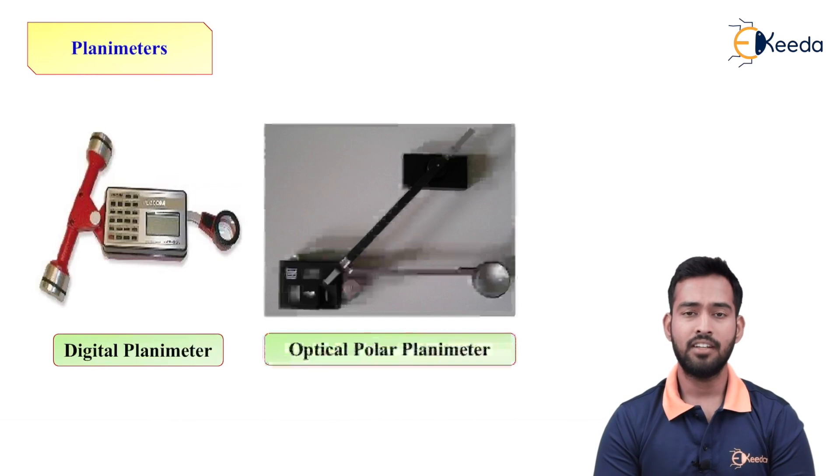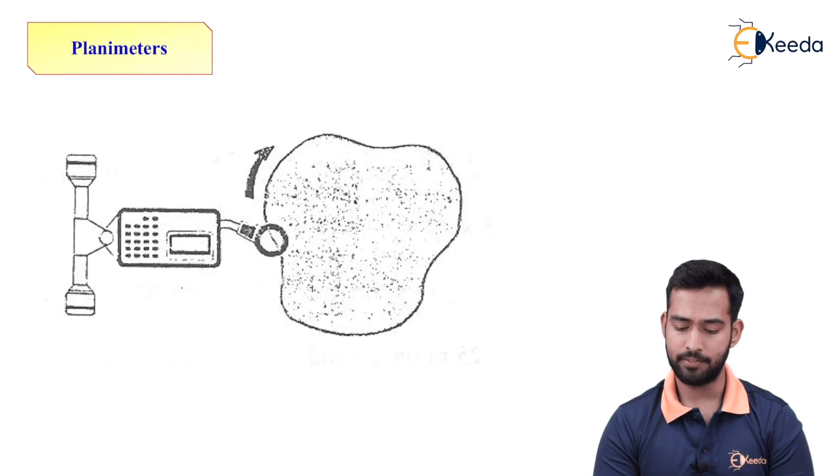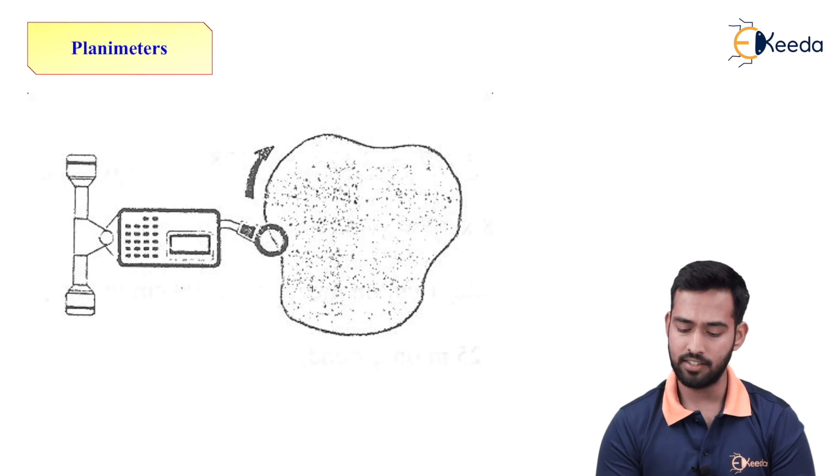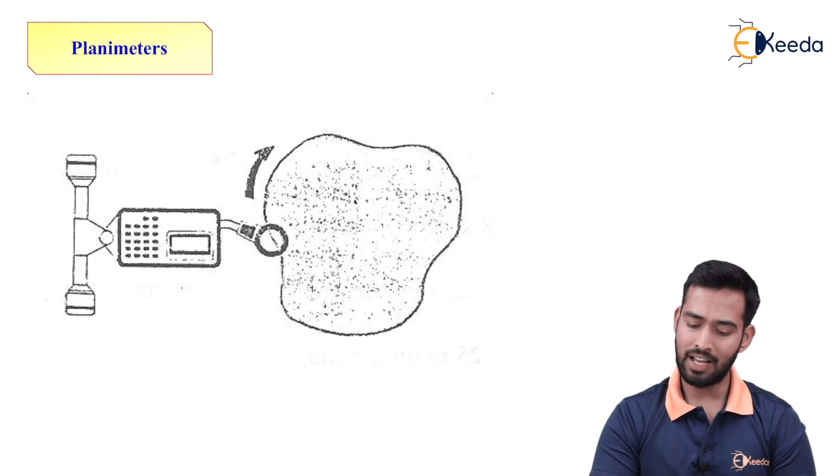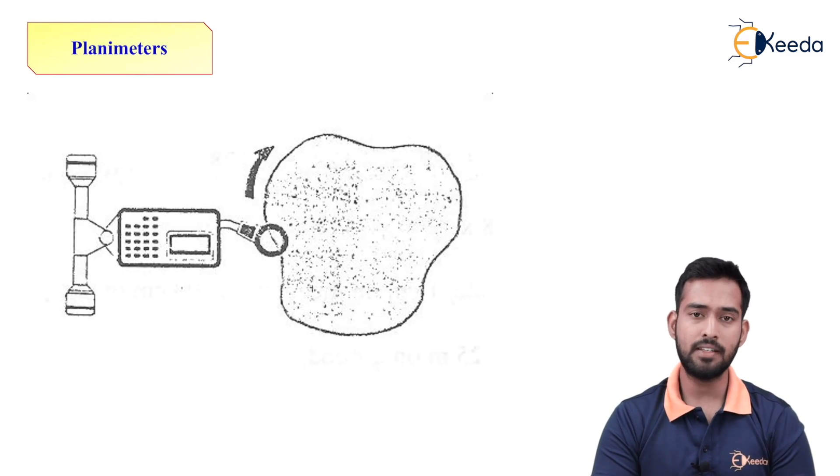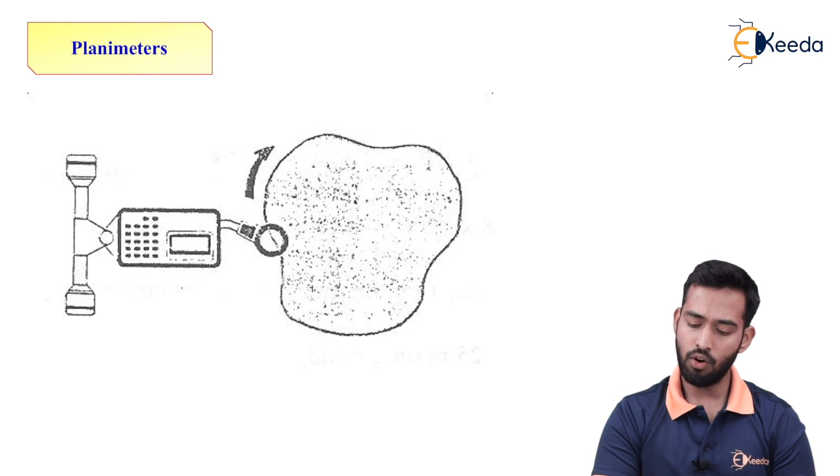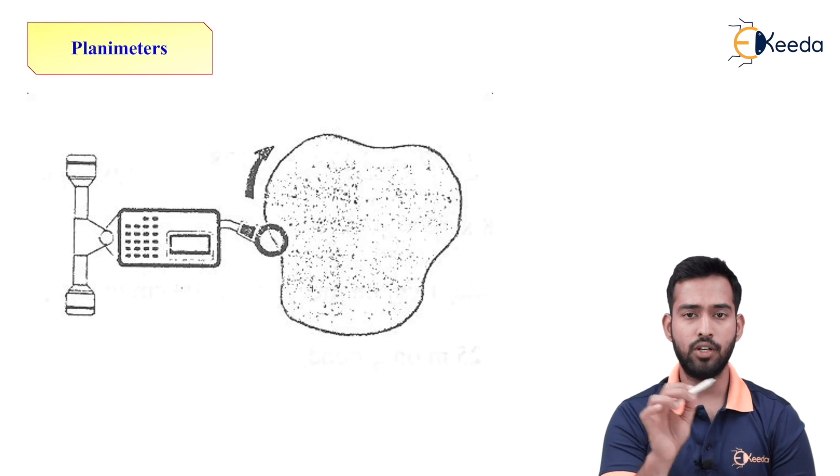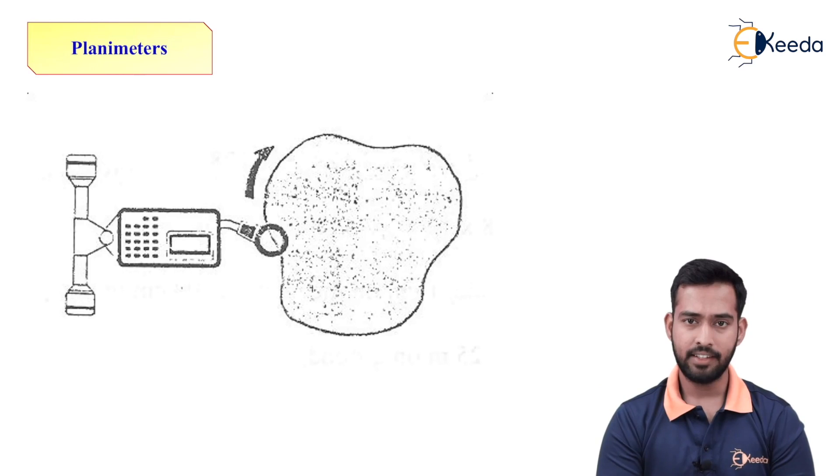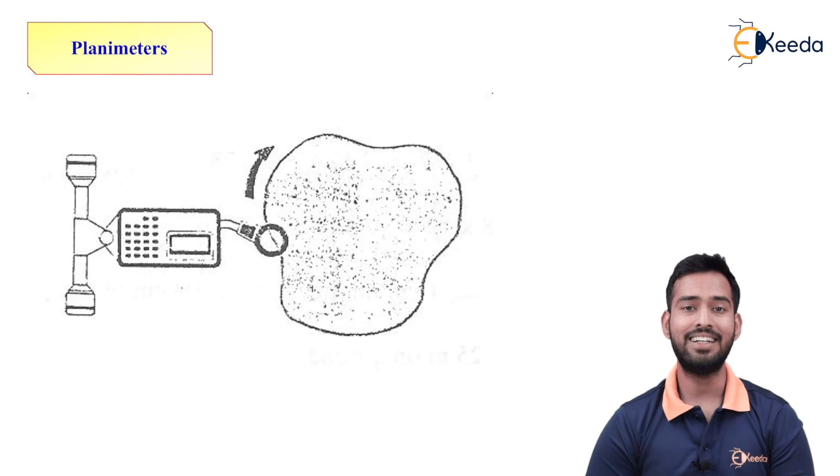Now, we will see what are the component parts of each planimeter. Over here, as you can see, we are using digital planimeter to calculate the area. The arrow represents how we will follow the path of tracing. So simply, we have to just follow the path of tracing. The tracing point, we have to circulate over your boundaries. And then, we have to just take the reading on your digital display. So directly we will get reading on your digital display.